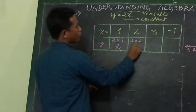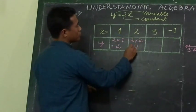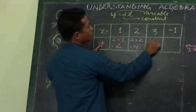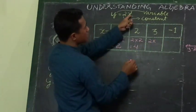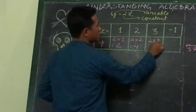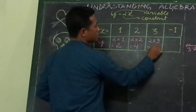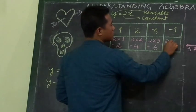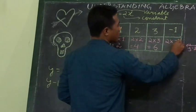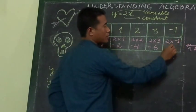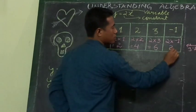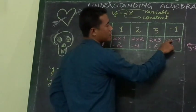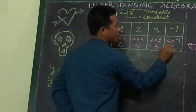y equals to 2x. 2 into 2 is 4. y equals to 2 into x; x is 3, so 2 into 3 equals 6. 2 into minus 1: 2 multiplied by minus 1 — plus multiplied by minus gives minus 2.